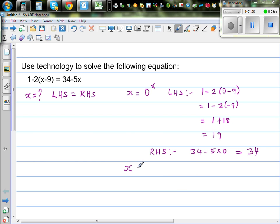So let's say x is equal to negative 1. If x is negative 1, what would you do? The same process. Your left hand side would be 1 take away 2 times negative 1 take away 9, which is 1 minus 2 times negative 10. This is 1 plus 20, which is 21.